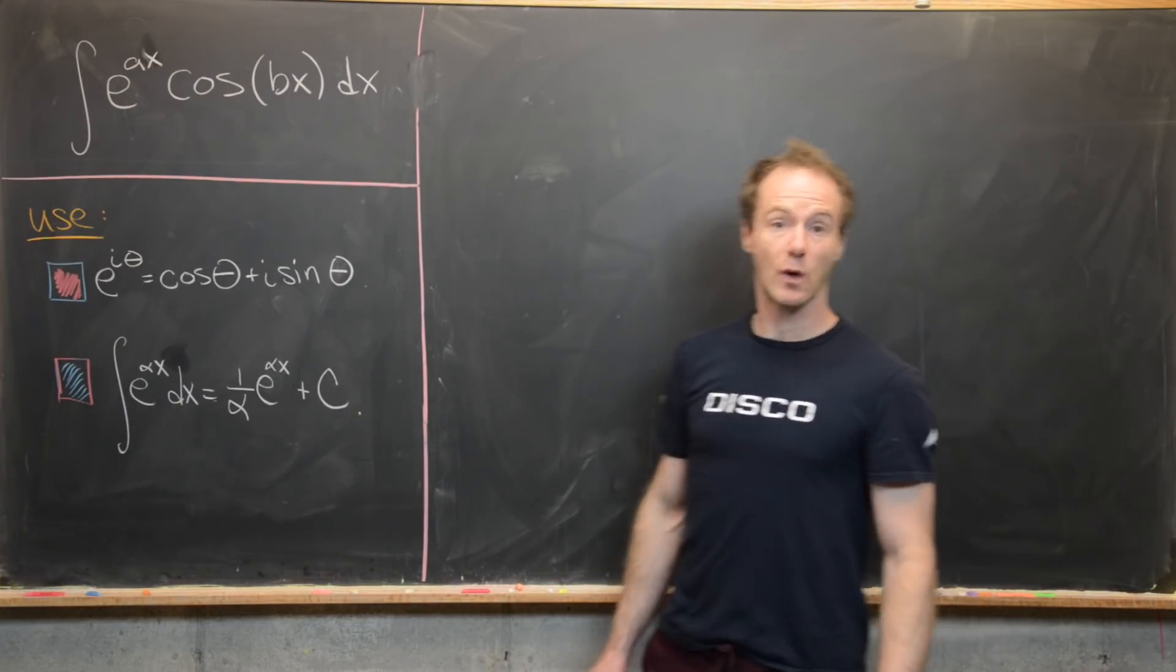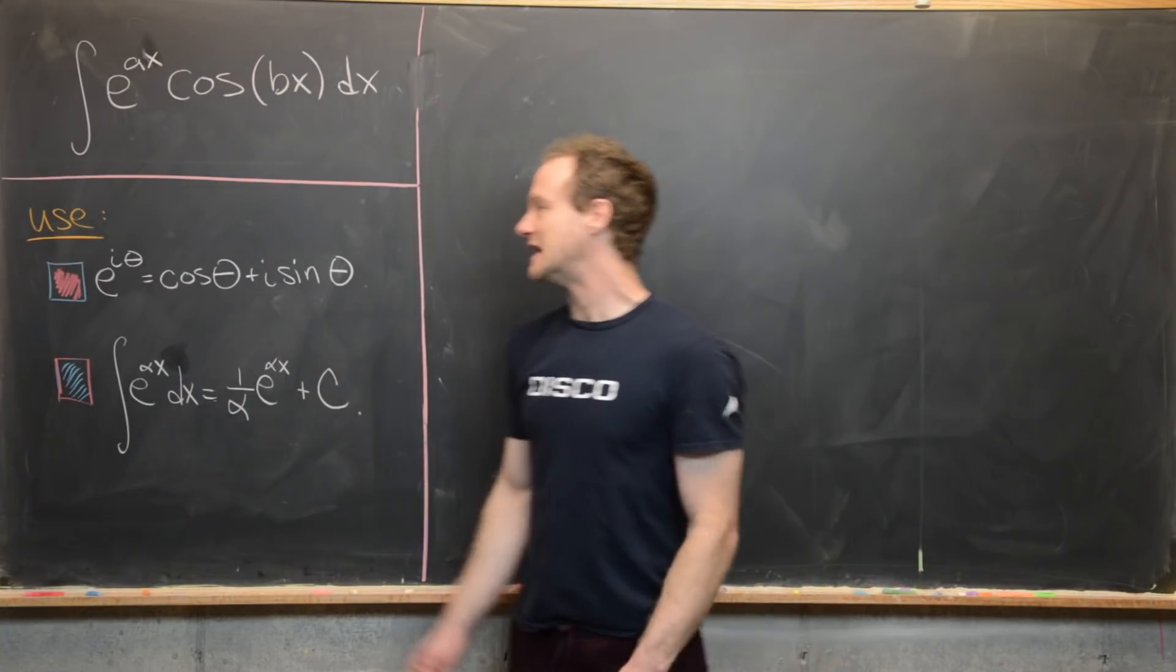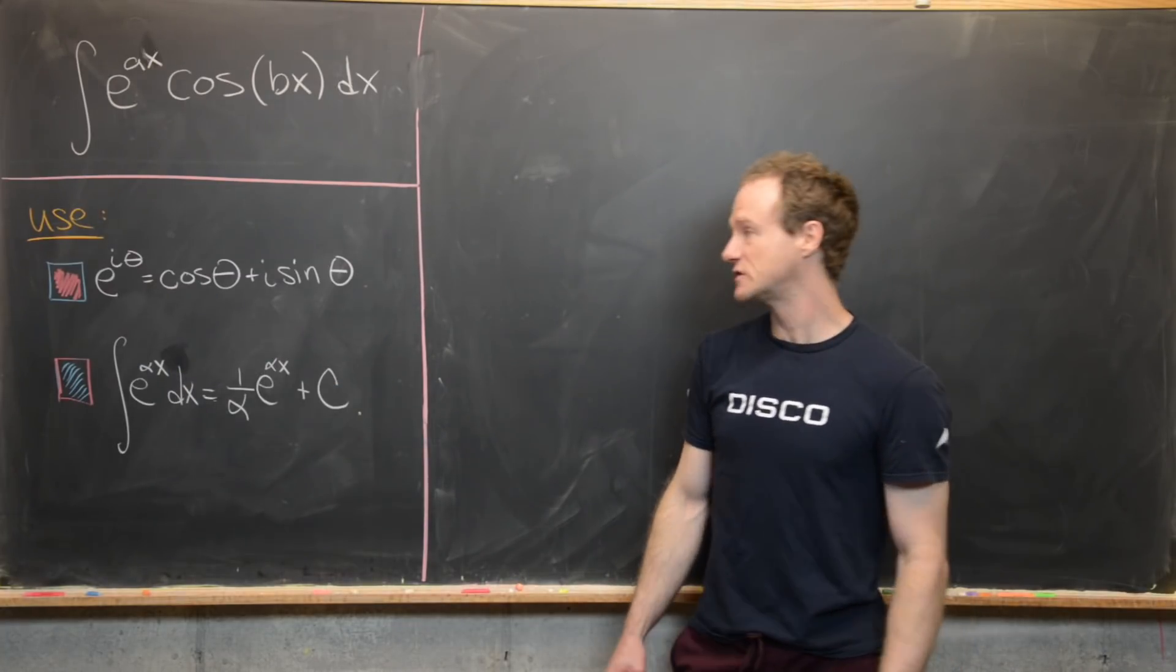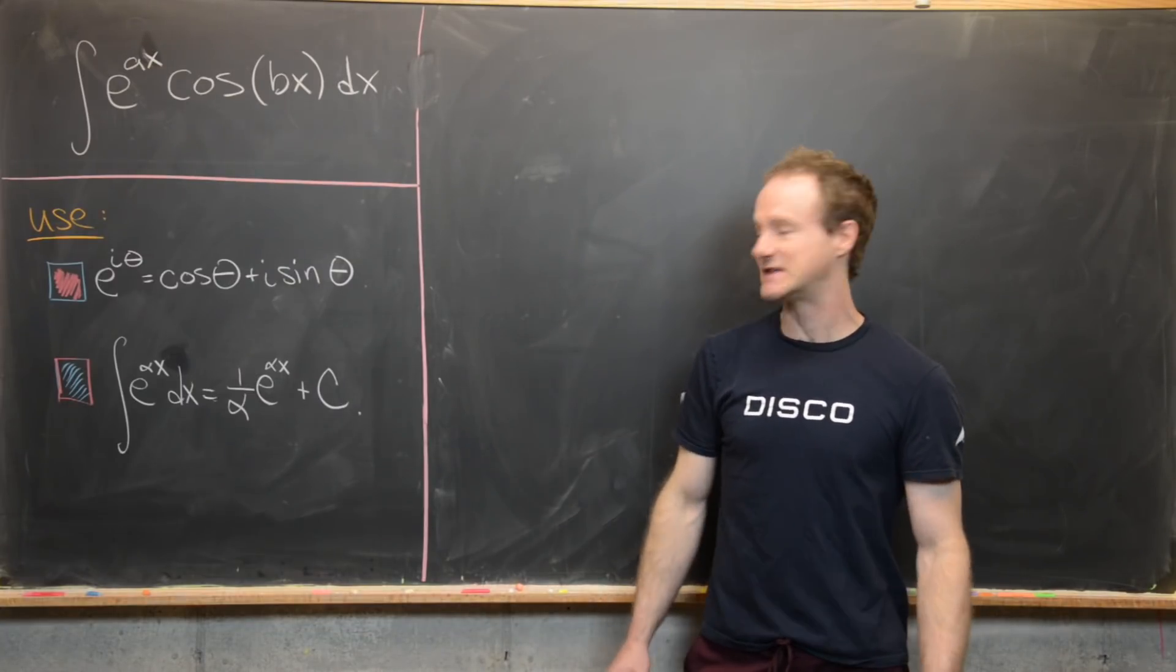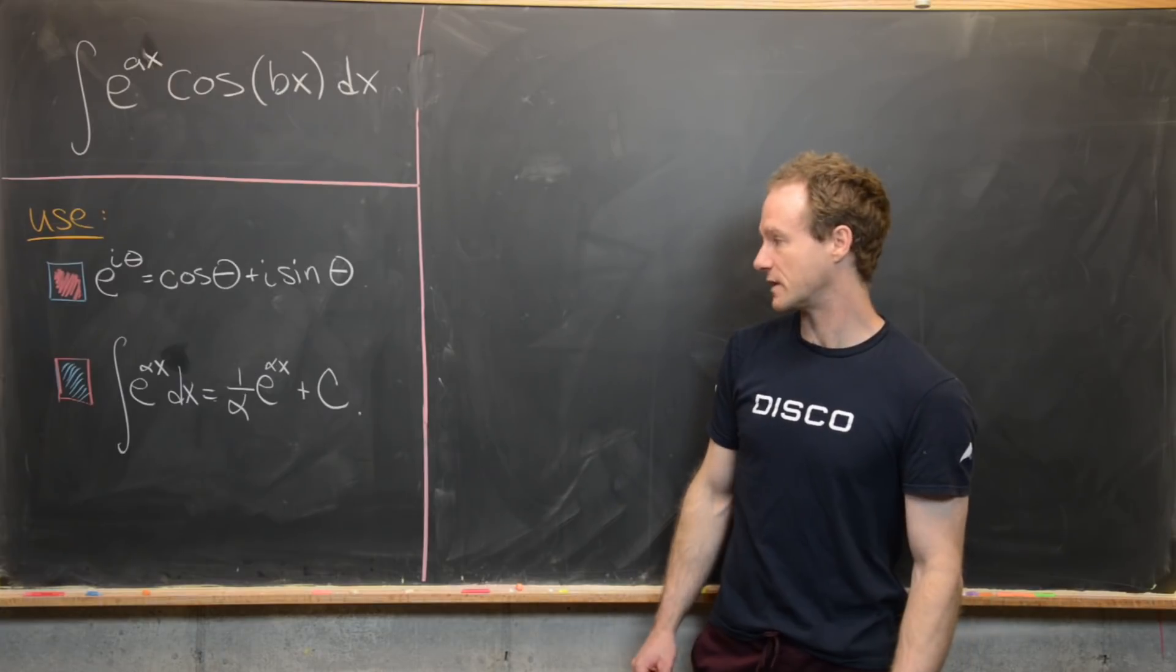One of them is called Euler's formula. It says that e^(iθ) equals cos(θ) plus i·sin(θ). You can prove this using a Taylor series, but this is a pretty commonly known formula.